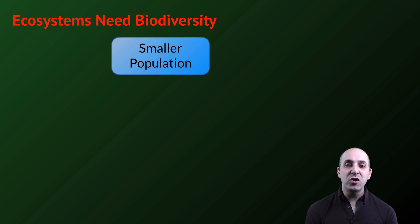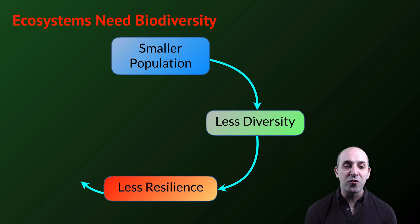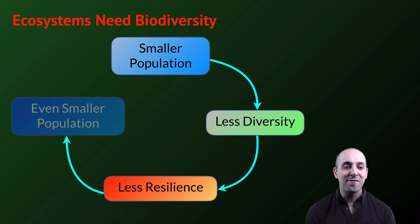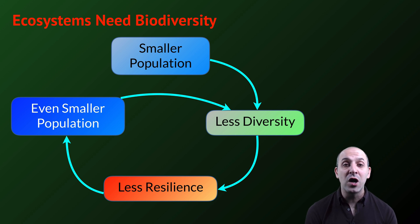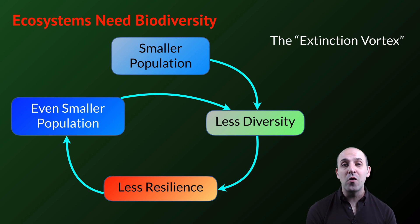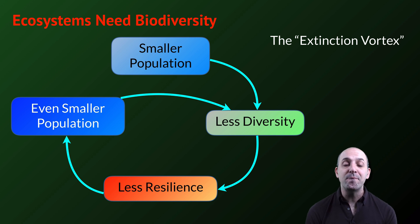The smaller the populations of organisms in an ecosystem, the less diversity there is, the less resilience those populations have, which leads to even smaller populations and less diversity and less resilience, down what is known as the extinction vortex. So in order to keep our ecosystem functional, we need to maintain the biodiversity that we find in those ecosystems.